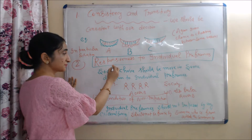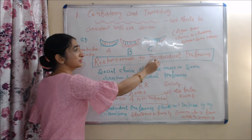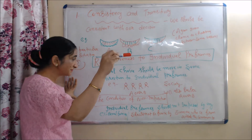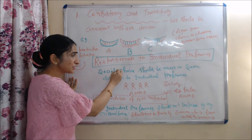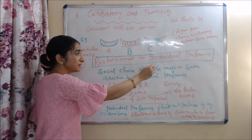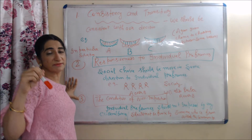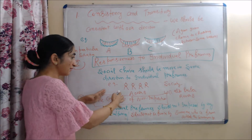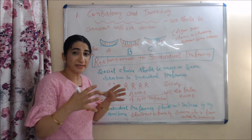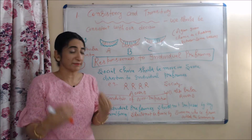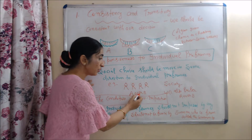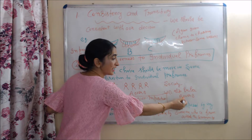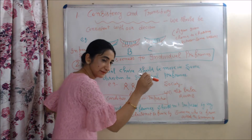The second condition is responsiveness to individual preferences. It means the social choice should move in the same direction as individual preferences. For example, if every individual prefers A over B, then society will also prefer A over B.